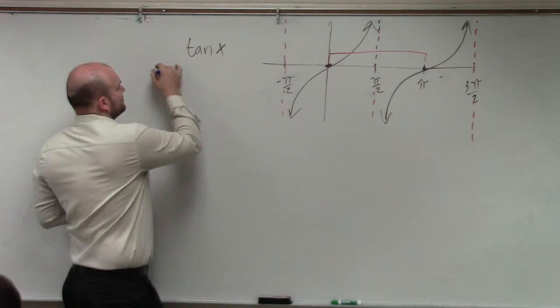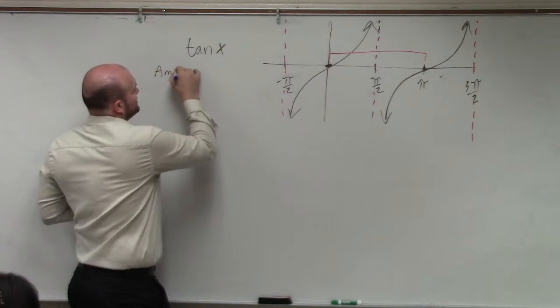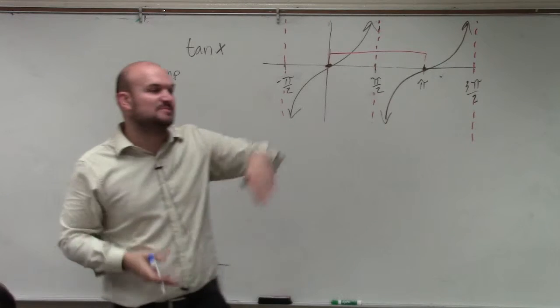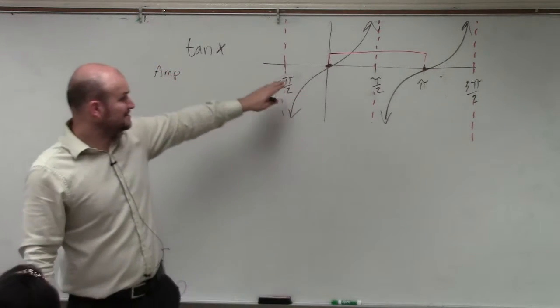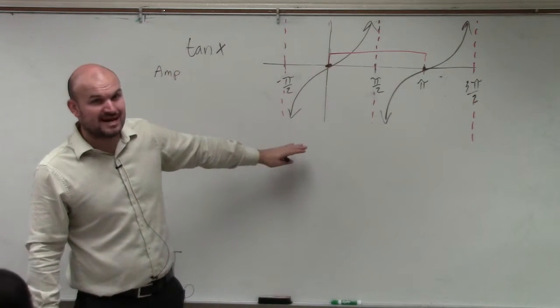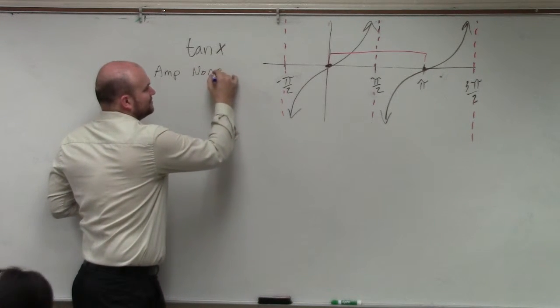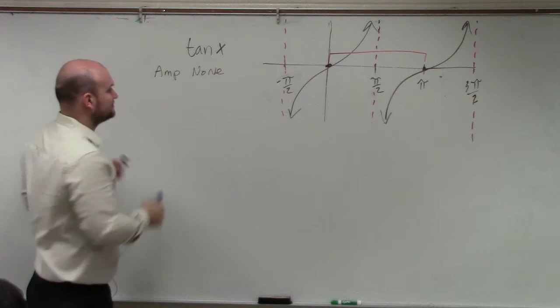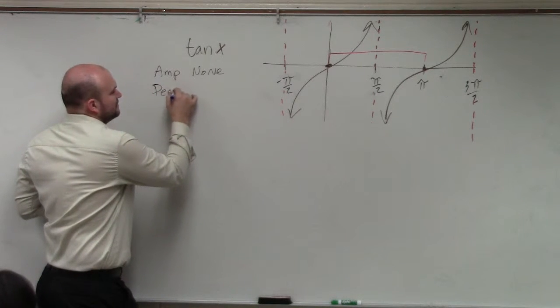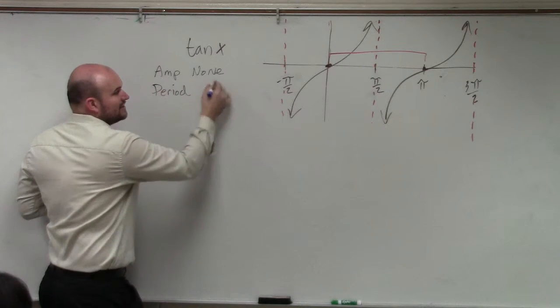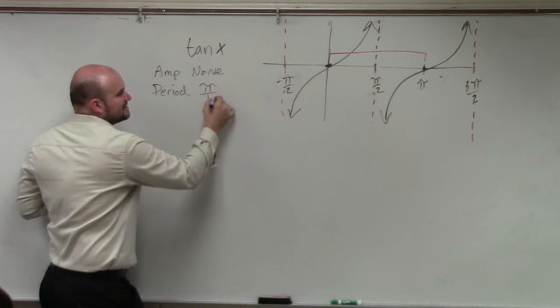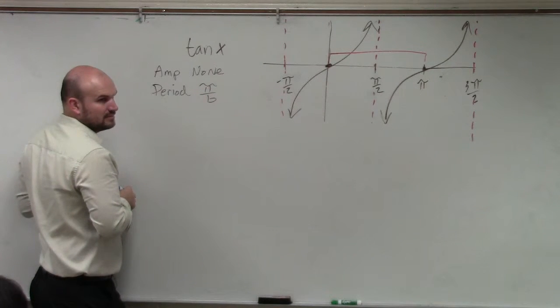So tangent, amplitude. Amplitude is the half distance between the highest and the lowest. Does this graph ever stop going up? Does it ever stop going down? So guess what? There is no amplitude, period. Period now is just going to be pi divided by b, OK?